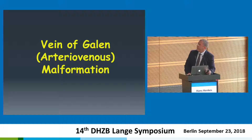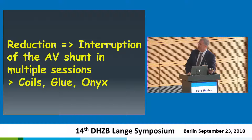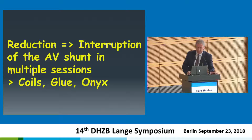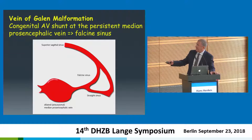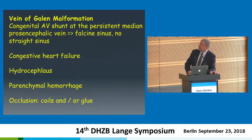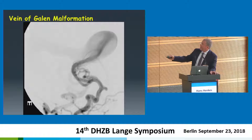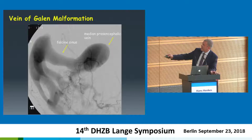Let's go to the real intracranial arteriovenous shunts — vein of Galen malformations. The key feature is that these kids have no vein of Galen; they have other veins but certainly no vein of Galen, and reduction of the shunt is key in order to correct the volume overload for the heart. The so-called persistent median prosencephalic vein is replacing the vein of Galen, and the key feature of these kids is they have no straight sinus — they have a falcine sinus. Congestive heart failure is the main issue in neonates. There is a brain artery going to this huge sac, which is a varix of the persisting median prosencephalic vein, draining through a falcine sinus — no straight sinus. That's the key feature: persisting prosencephalic vein, falcine sinus, no straight sinus.